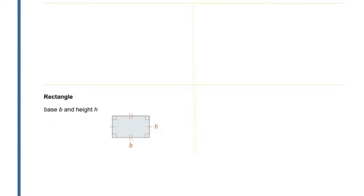Next, a rectangle, with base b and height h, as shown here. The perimeter of a rectangle is 2 times the length of the base b plus 2 times the length of the height h, or it can be written as 2 times the quantity b plus h. The area is the product b times h.